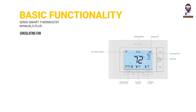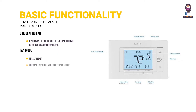Circulating fan: if you want to circulate the air in your home using your indoor blower fan, you can set this feature in the app or at the thermostat. To set from the thermostat, press menu, press next until you come to FN setup, use the up arrow button to toggle the percentage you'd like the fan to run each hour, then press exit.